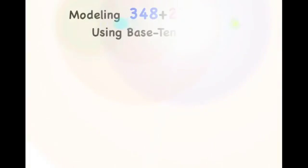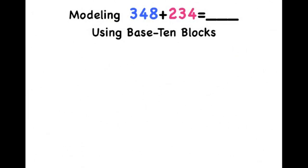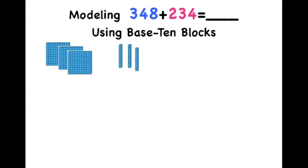First, let's start by modeling the equation 348 plus 234 using our base-10 blocks. First, let's build 348. 348 has three hundreds, four tens, and eight ones.